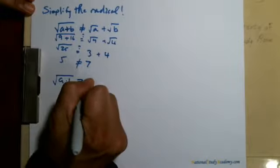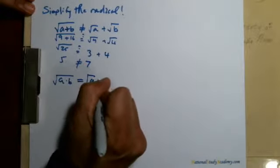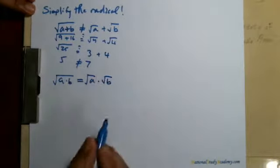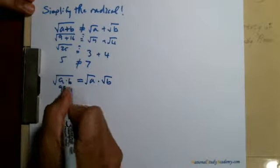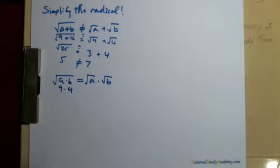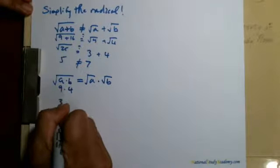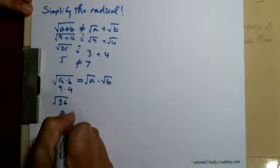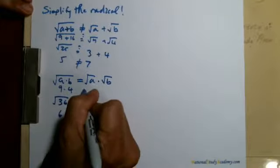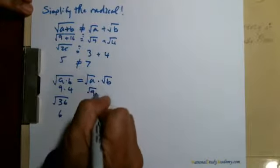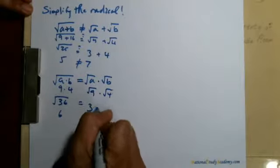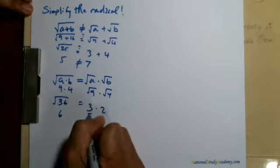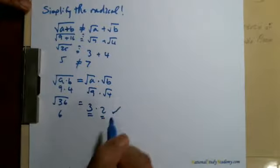But, square root of a times b does equal square root of a times the square root of b. Here's an example. 9 times 4 is 36. Square root of 36 is equal to 6. The square root of 9 times the square root of 4, which is equal to 3 times 2, is obviously 6. It checks out.